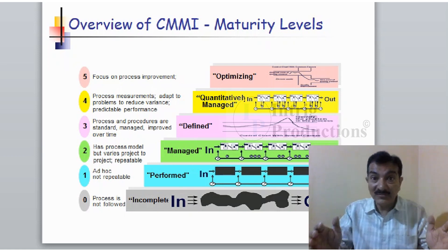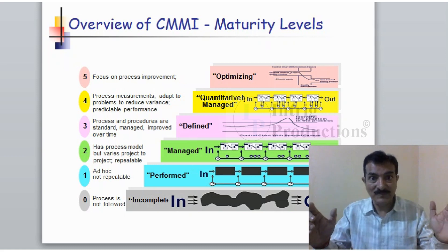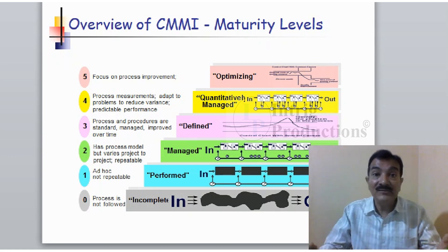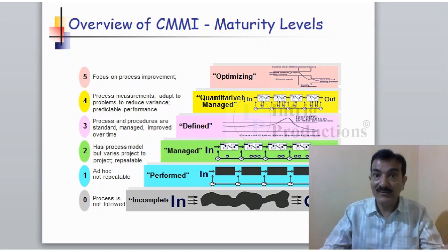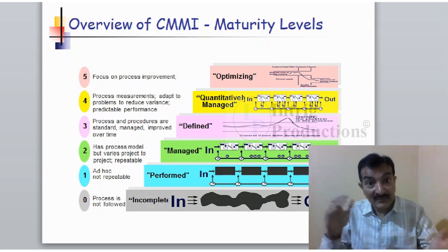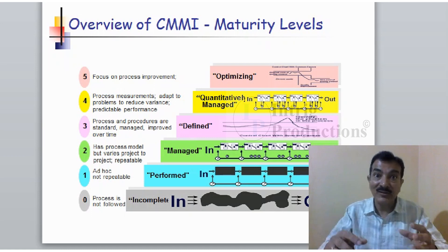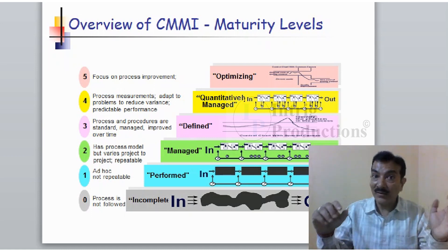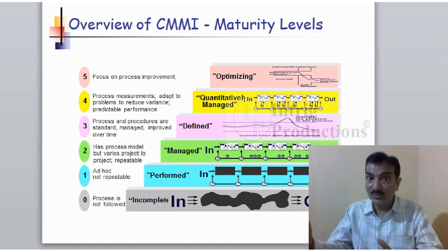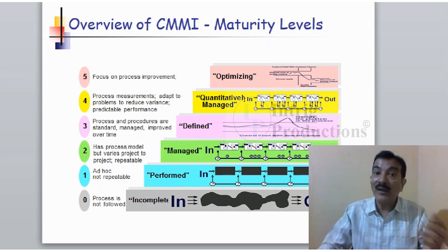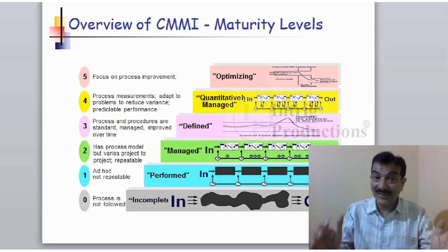If you are following the project management practices as defined by the CMMI, then you are at level two. If you are following all those engineering practices as defined by the CMMI, then you are at level three. If you are quantitatively managing the process and the product — ensuring that the engineering processes are quantitatively managed — then you are at level four. If you are ensuring that your processes are doing what they are supposed to do without variations, and if there is variation you are optimizing it, then you are at level five.